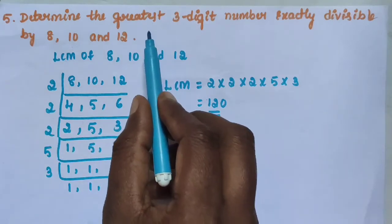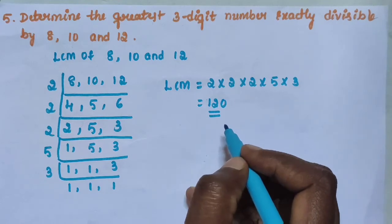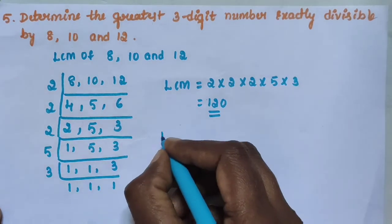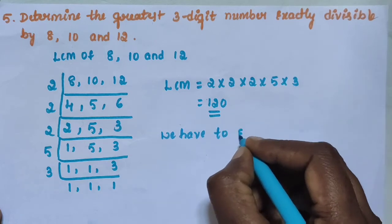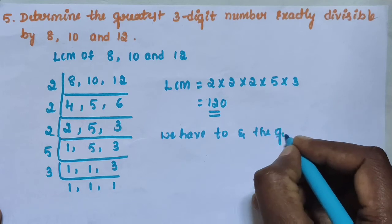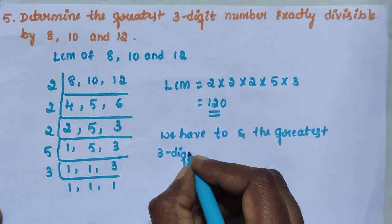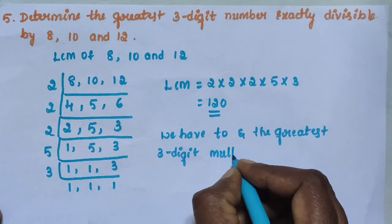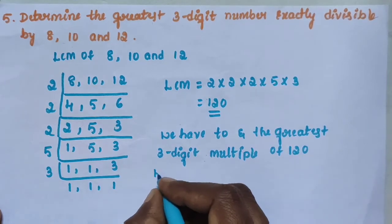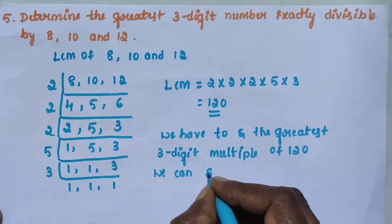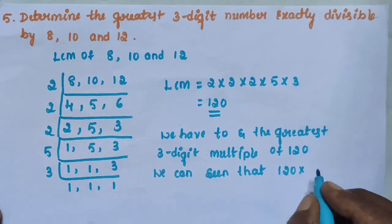Now we will determine the greatest 3-digit number. 120 is a 3-digit number but is not the greatest. We can see that 120 × 8 gives us 960.